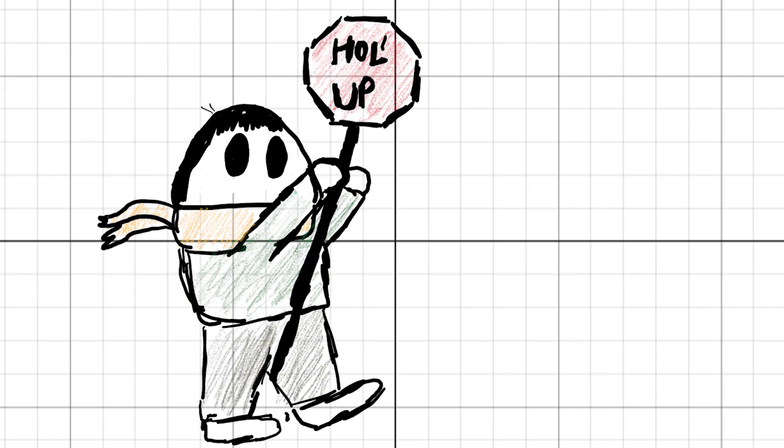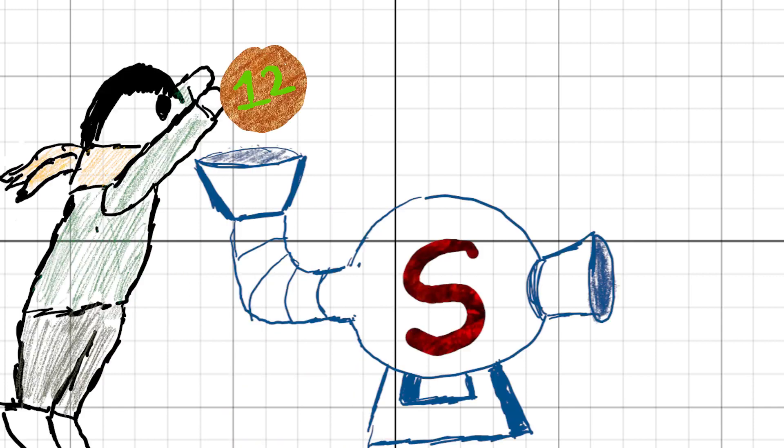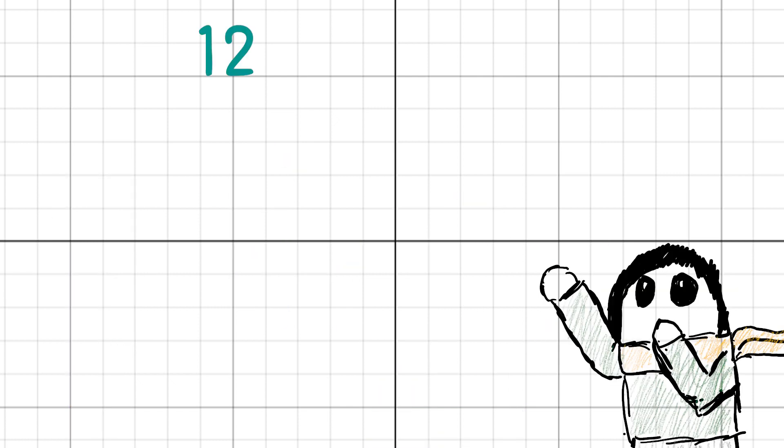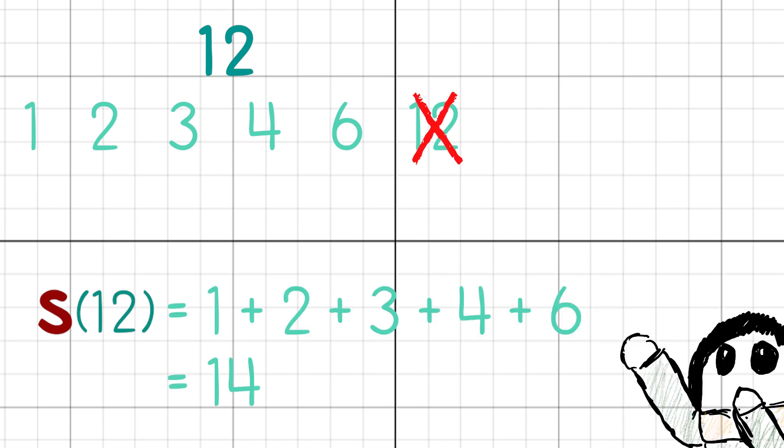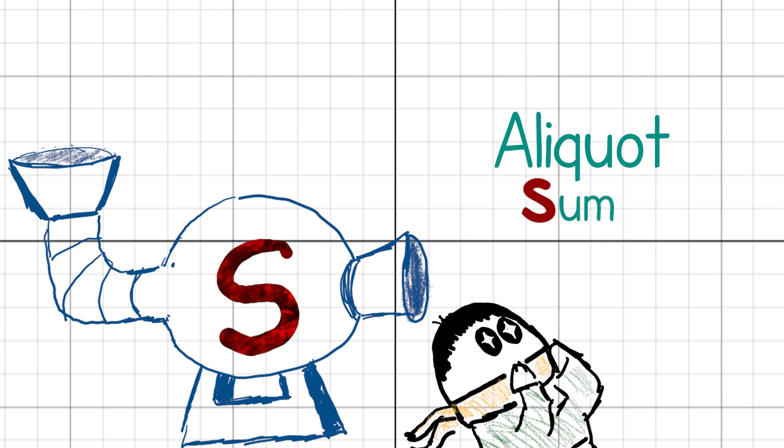Before we get any deeper, we need to define two important functions. First one is the function s, which takes in a natural number and spits out the sum of its proper divisors, which are all the divisors that are strictly smaller than the number. If we shove in 12 into the function, the divisors of 12 are 1, 2, 3, 4, 6, and 12. For s of 12, we ignore the number itself and add all the others up, giving us a total of 14. This is also called the aliquot sum of n.